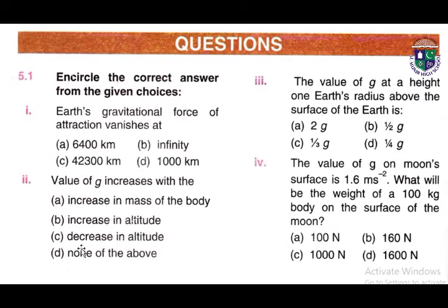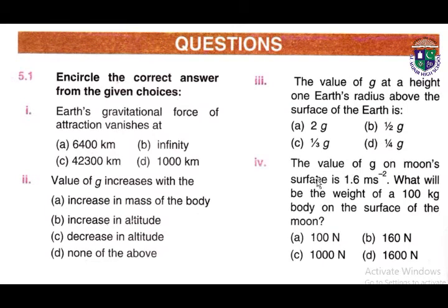The correct option for Part 2 is C: decrease in altitude. Number 3: the value of g at a height of one Earth's radius above the surface of the Earth — the correct answer is D: one over four g.